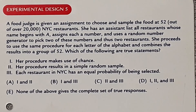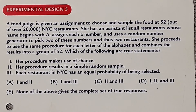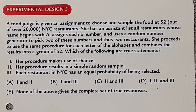A food judge is assigned to sample food at 52 out of over 20,000 New York restaurants. Her assistant lists all restaurants whose name begins with 'A', assigns each a number, and uses a random number generator to pick two. She repeats this procedure for each letter of the alphabet and combines the results into a group of 52. The question asks: does her procedure use chance, result in a simple random sample, and does each restaurant have an equal probability of being selected?